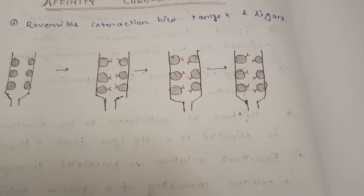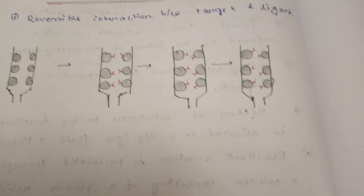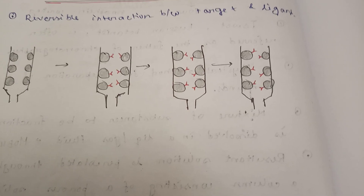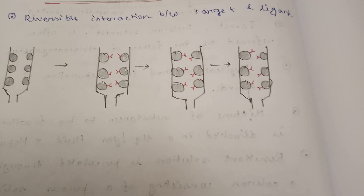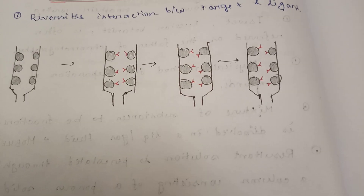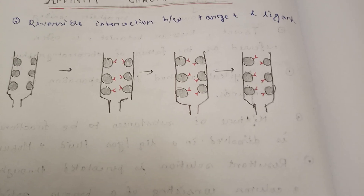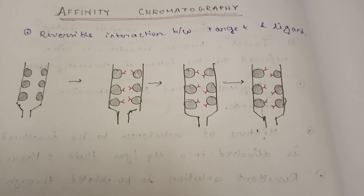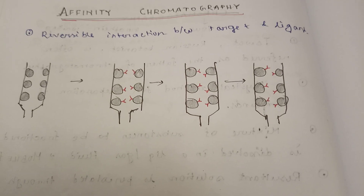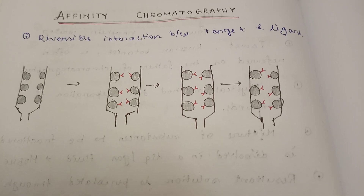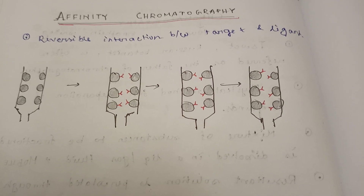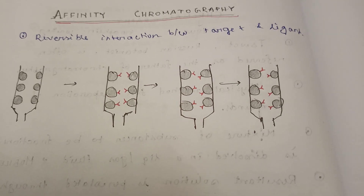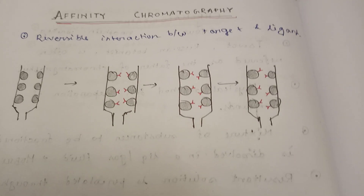There will be many unbound substances which will be washed away. Then at the elution part, there will be some competitive ligand, or by enabling suitable pH, ionic strength, or polarity, we can have the molecule of interest at the end.